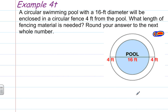Example 4T: A circular swimming pool with a 16-foot diameter will be enclosed in a circular fence, 4 feet from the pool. What length of fencing material is needed? Round your answer to the next whole number. These words right here, next whole number, will be important when it comes to our answer. That's not asking us to round. It's asking us to take it up to the next whole number.